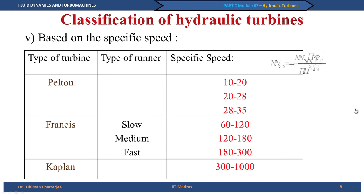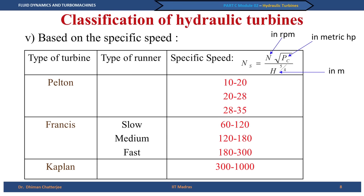The definition of specific speed N_s is given as N√P_C divided by H^(5/4). Note that it is H to the power 5/4 here, whereas for pumps in the last class we used H to the power 3/4. The coupling power P_C is in metric horsepower, N is in RPM, and H is in meters.